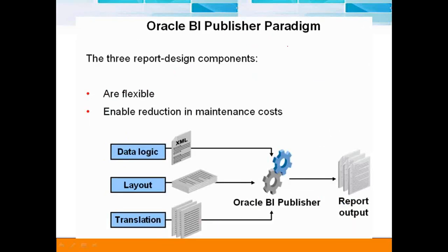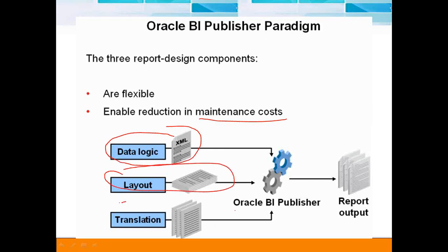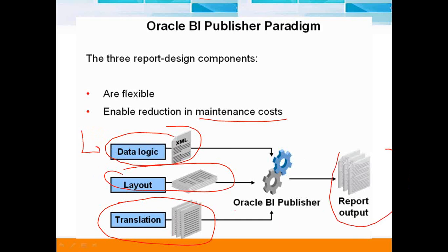BI Publisher has changed the complete model. Reports are divided into three different pieces — the three report design components — and they are flexible, with an overall reduction in maintenance cost. Data logic is maintained in an XML file, layout is maintained exclusively in a separate place, and translation is maintained separately as well. The BI Publisher engine stitches them together and creates the report. So if you change data logic, you don't need to modify layout or translation, and vice versa. Changes are confined to a specific area, reducing maintenance cost.